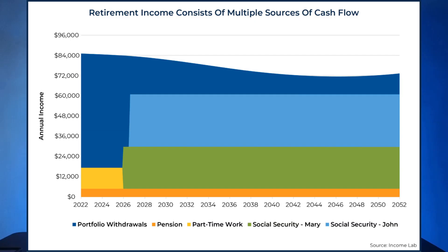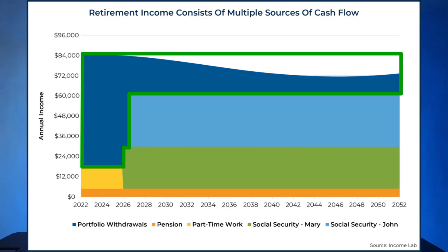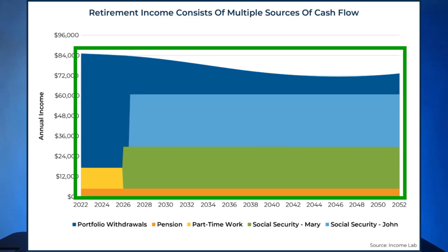For this reason, distribution rate guardrails are almost never useful in a real-world context. But this is where risk-based guardrails come in. Rather than focusing on distribution rates, we can instead set our guardrails around overall risk levels that look at income from all sources.